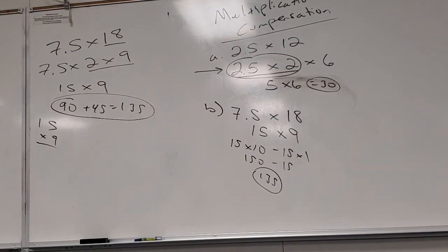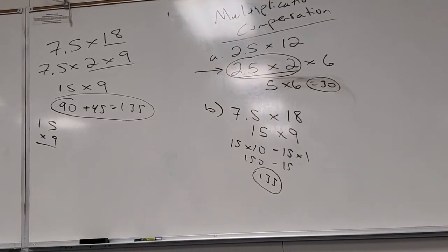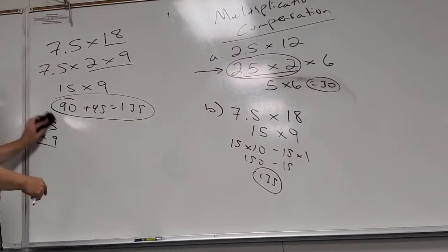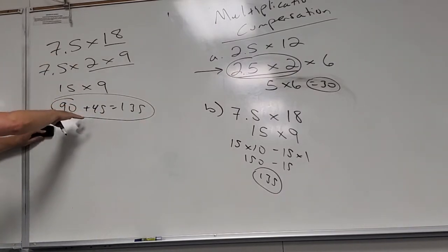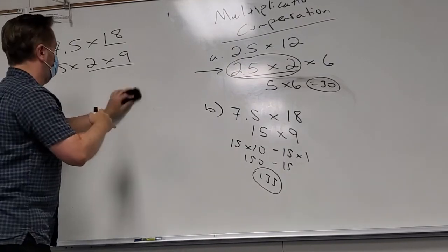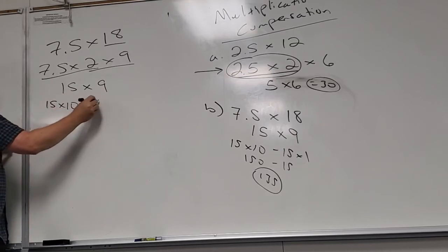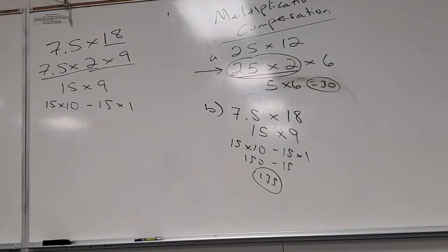We want students to fully understand why these things work. So for 15 times 9: nine 15s is ten 15s minus one 15, which is 150 minus 15 = 135. Similarly, multiply by 99 or 999 the same way. What number would you hope to multiply by besides one? Zero, ten, one hundred — because those are easy.